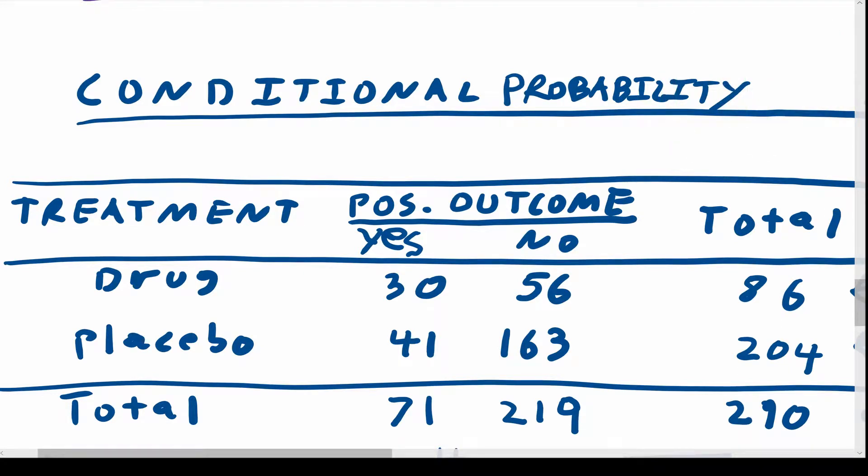So here we have a very typical setup for a placebo-controlled randomized clinical trial. Such a setup is actually as simple as it possibly can be because the treatment variable only has two possibilities, drug and placebo, and the outcome variable only has two possibilities, yes and no. So from the perspective of teaching conditional probability, this is actually as simple as it possibly can be.